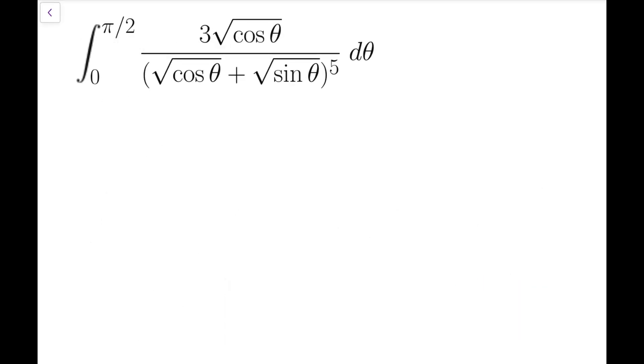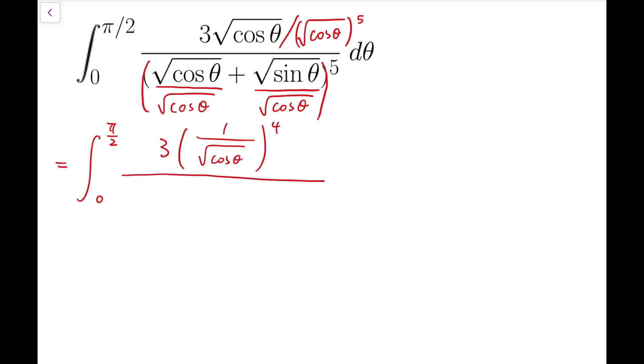To evaluate this integral, I'm going to first divide the numerator and the denominator both by (√cos θ)^5. So in effect, I'm going to divide √cos θ inside the bracket, as well as doing that on √sin θ. And so the integral will become 3 times 1/(√cos θ)^4, divided by (1 + √tan θ)^5 dθ.